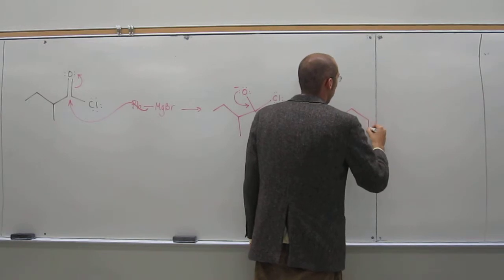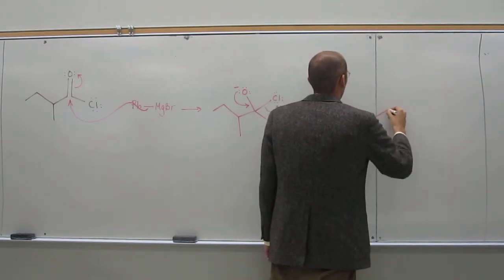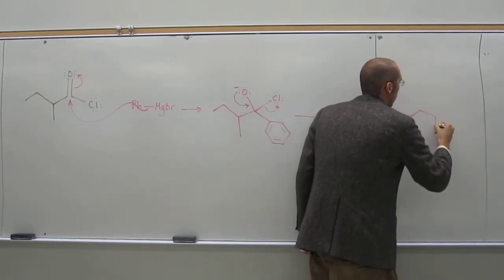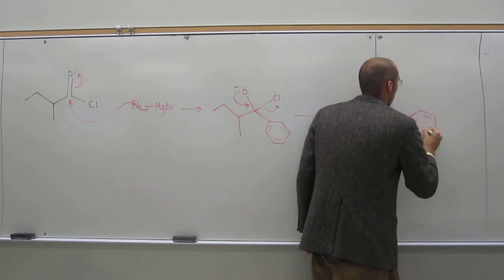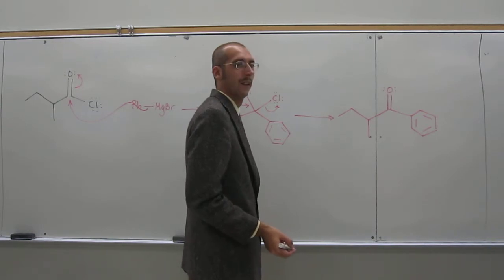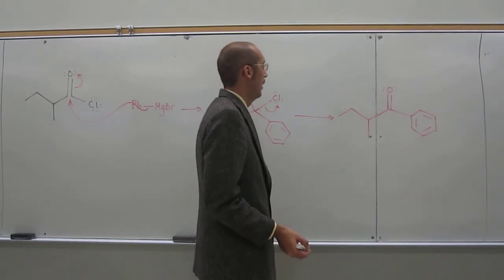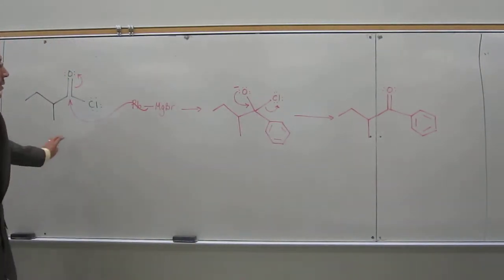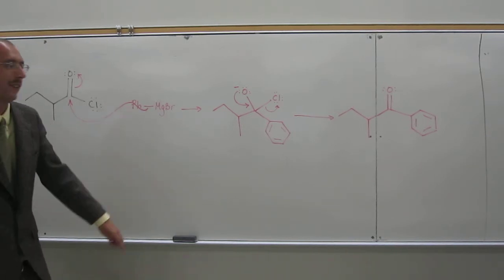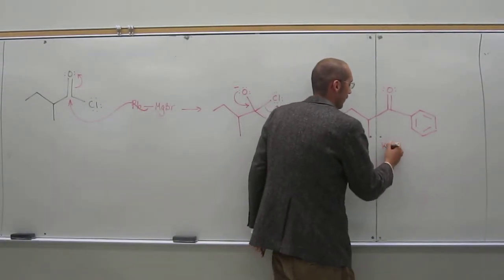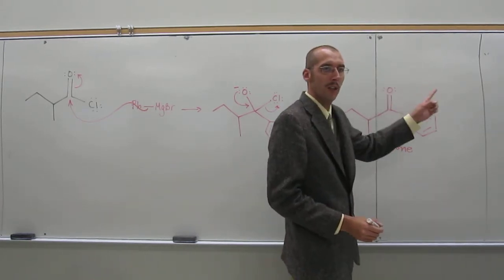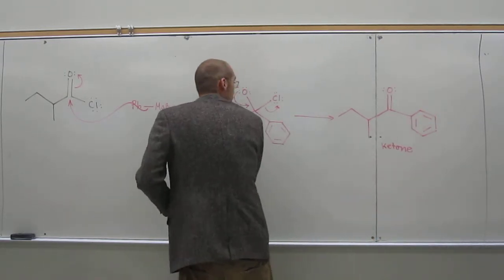So now what's that functional group called? The one that we just made, from acid chloride to... Ketone? Ketone, right. But when the ketone sees more Grignard reagent, it's going to do what a ketone does.